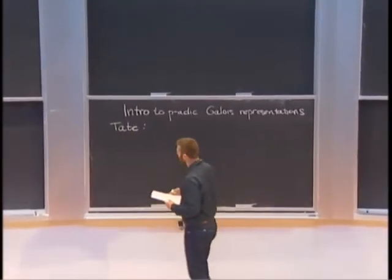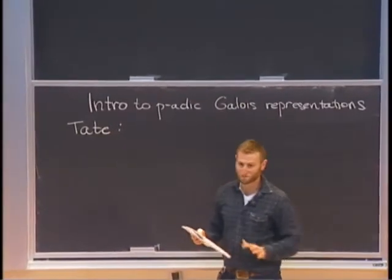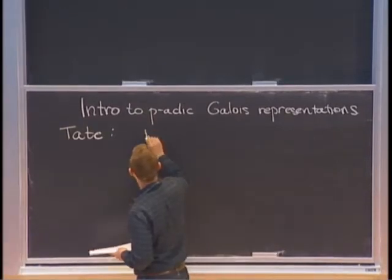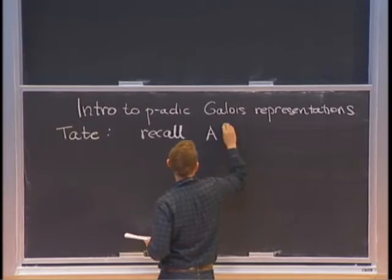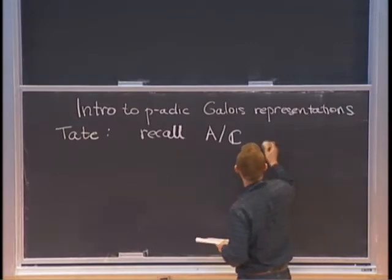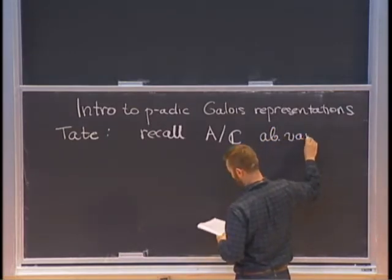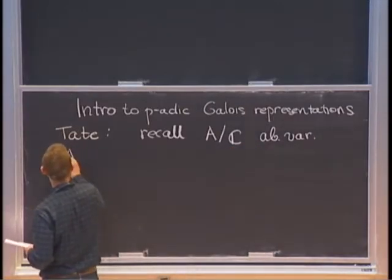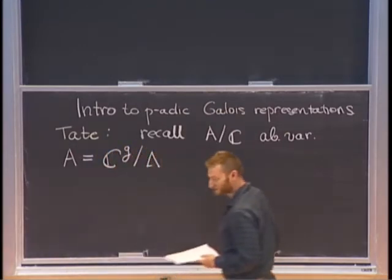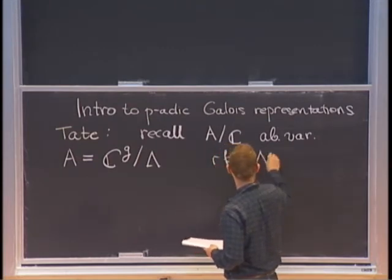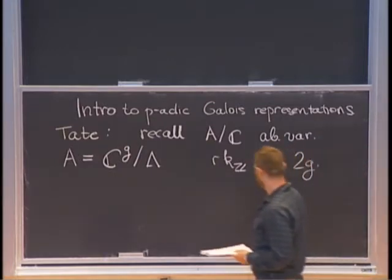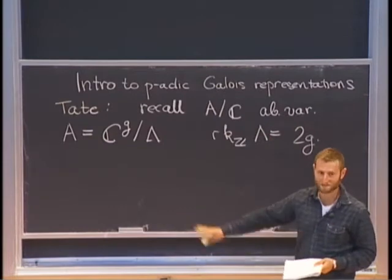Tate's paper on p-divisible groups. Tate carried out arguably the first case of p-adic Hodge theory in the context of abelian varieties. So recall that if A is an abelian variety, and let's just start off over ℂ, and we'll switch to the p-adic world shortly. If A over ℂ is an abelian variety, then in particular it's a complex torus.